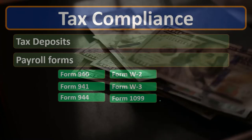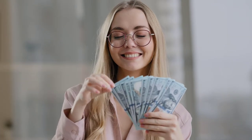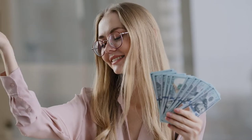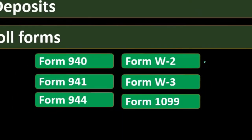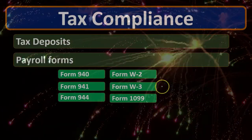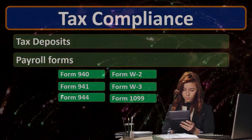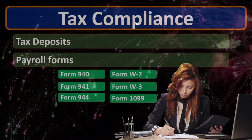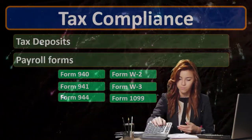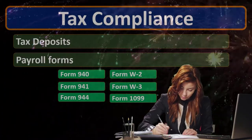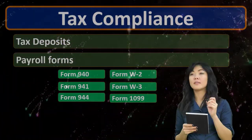A 1099 contractor is basically another business, so the employer is not responsible for taking the tax money out. As a W-2 employee, if we report the right number of exemptions on the W-4, the employer is responsible for withholding the money we owe to the IRS and we shouldn't owe anything at year end. As a 1099 contractor, however, we must handle our own tax withholding — it's extra work and has its own pros and cons.